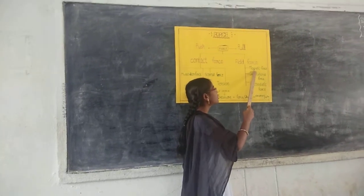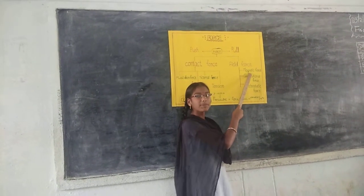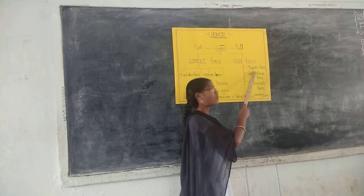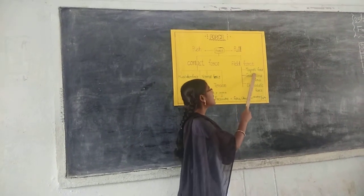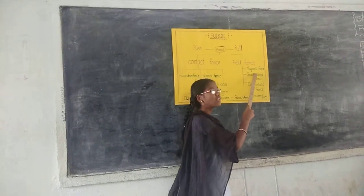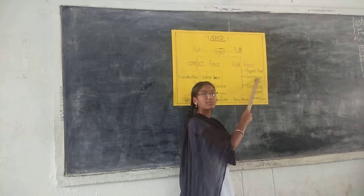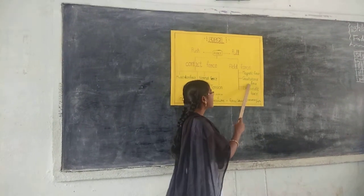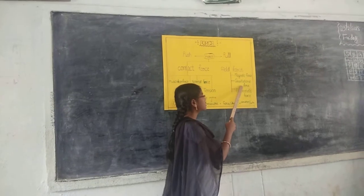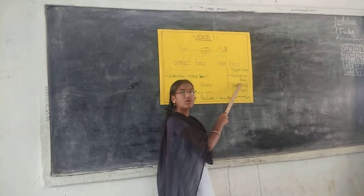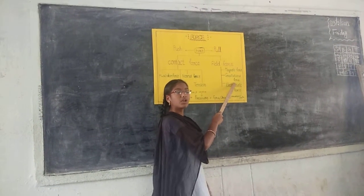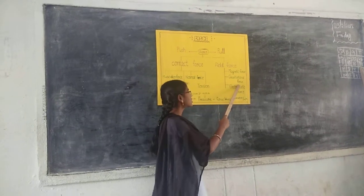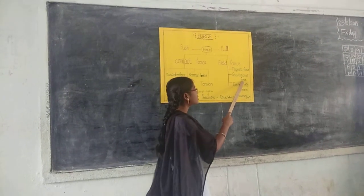Magnetic force: it involves the repulsion and attraction of objects. Like forces repel and unlike forces attract each other. Gravitational force: the force that pulls a freely falling body toward the earth is called gravitational force.